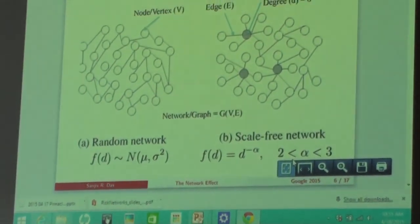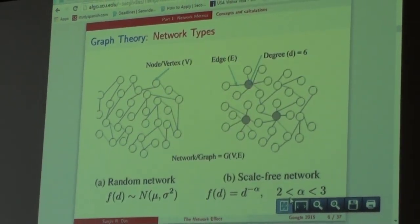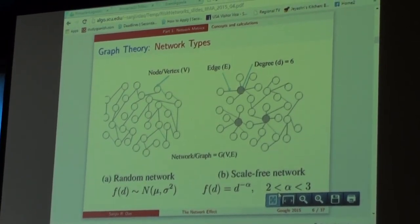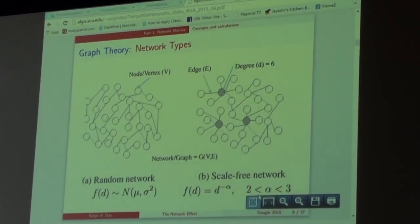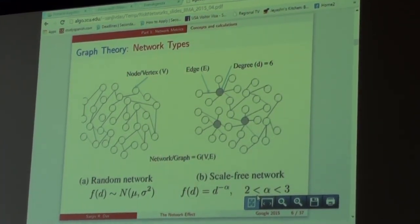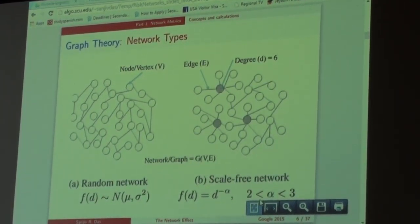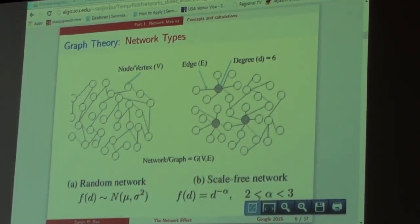This is sort of an important picture. There are two types of graphs I want you to focus on. In computer science we call it a graph. The network is a graph, and many of you might have studied graph theory. So a graph is nothing but a function on nodes and connections.